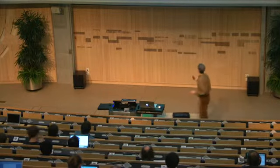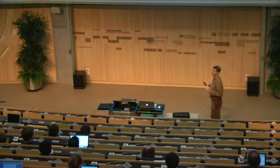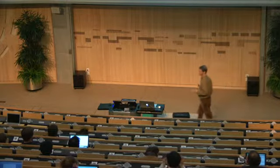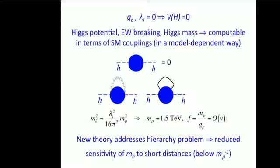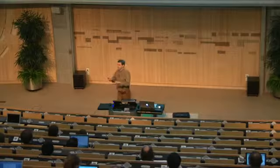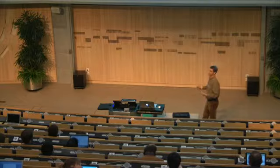The important thing is that this is essentially a sigma model described by a decay constant F given by M-rho divided by G-rho. In the limit where gauge and Yukawa couplings are zero, the potential of the Higgs is exactly zero because the Higgs is a Goldstone boson — it will have zero mass. Once I turn on the gauge and Yukawa interactions, I've broken Goldstone symmetry because the shift symmetry is no longer exact, and therefore at loop level I'll generate a mass for the Higgs.